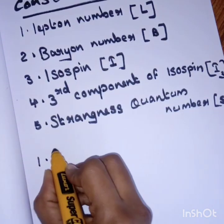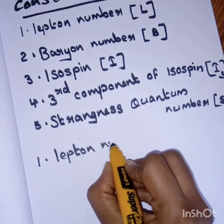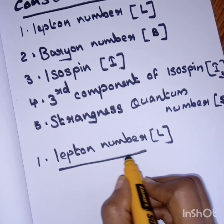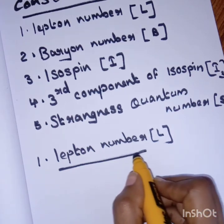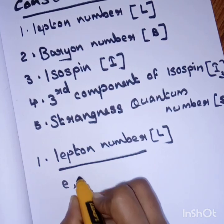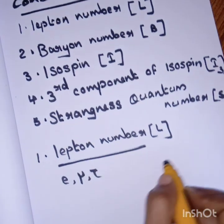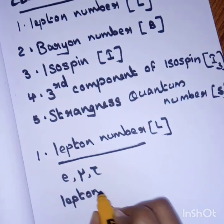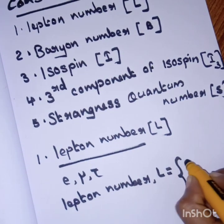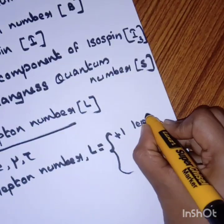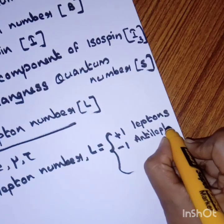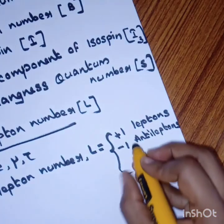Let me discuss each point. First, lepton number, capital L. In the previous video, I said elementary particles are classified into three groups. The first group is leptons. In the lepton group, they contain the electron family, muon family, and tau family. Lepton number L is plus one for leptons, minus one for antileptons, and zero for others.